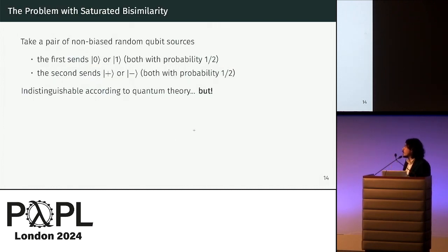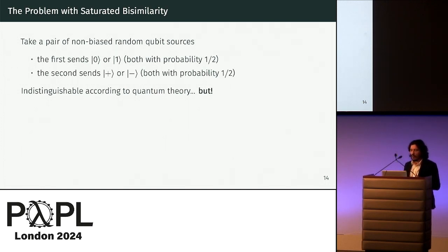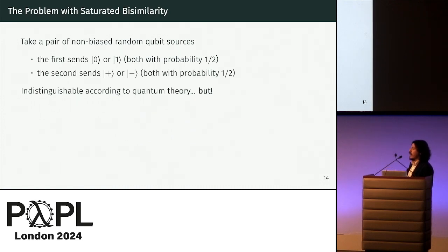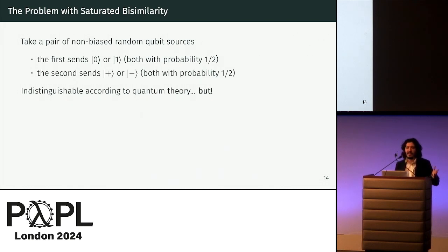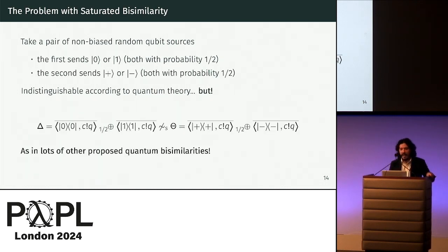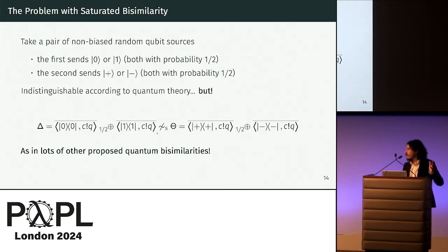As previous works already pointed out, there are some issues with this basic notion of saturation. For example, if we take a pair of non-biased random qubit sources — one that sends zero and one over some channel with fair probability, and another that sends plus and minus — according to quantum theory these should be indistinguishable, because if we look at their quantum states they are represented by the same density operator.